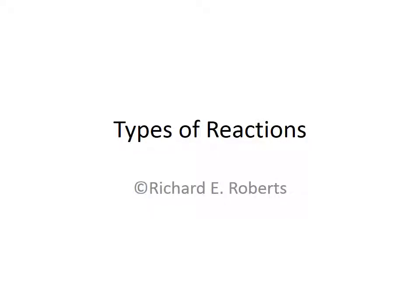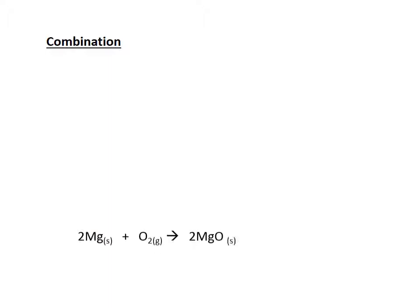We're going to talk about some types of reactions. There are certain patterns that come up quite frequently when looking at chemical reactions, and if you can spot these patterns, sometimes that gives you an insight into how to balance it or understand what's going on. There are some basic types of chemical reactions, and the first one is called a combination reaction.